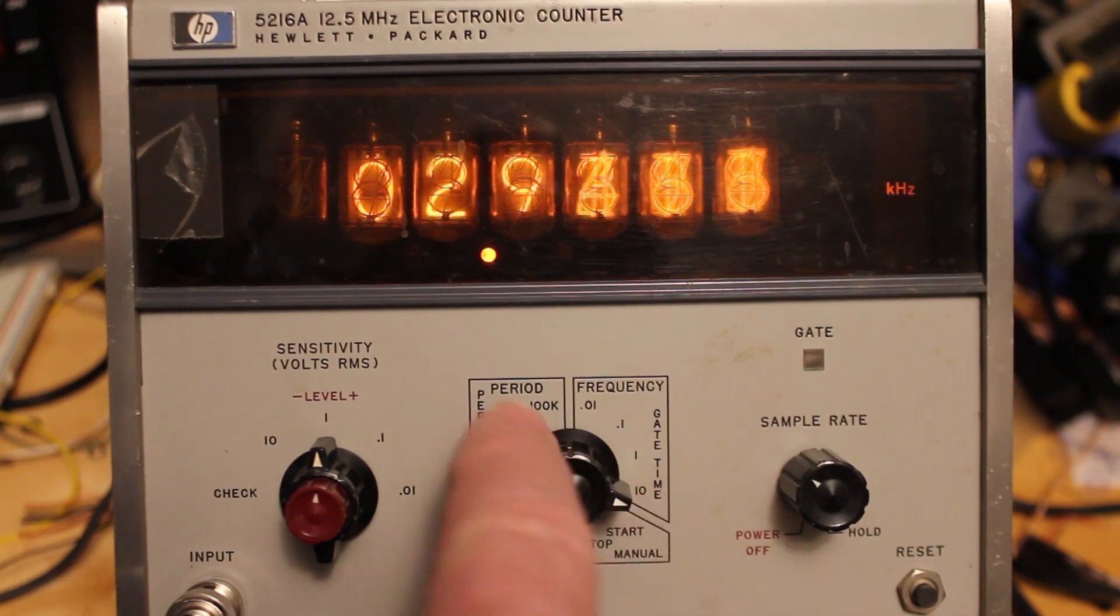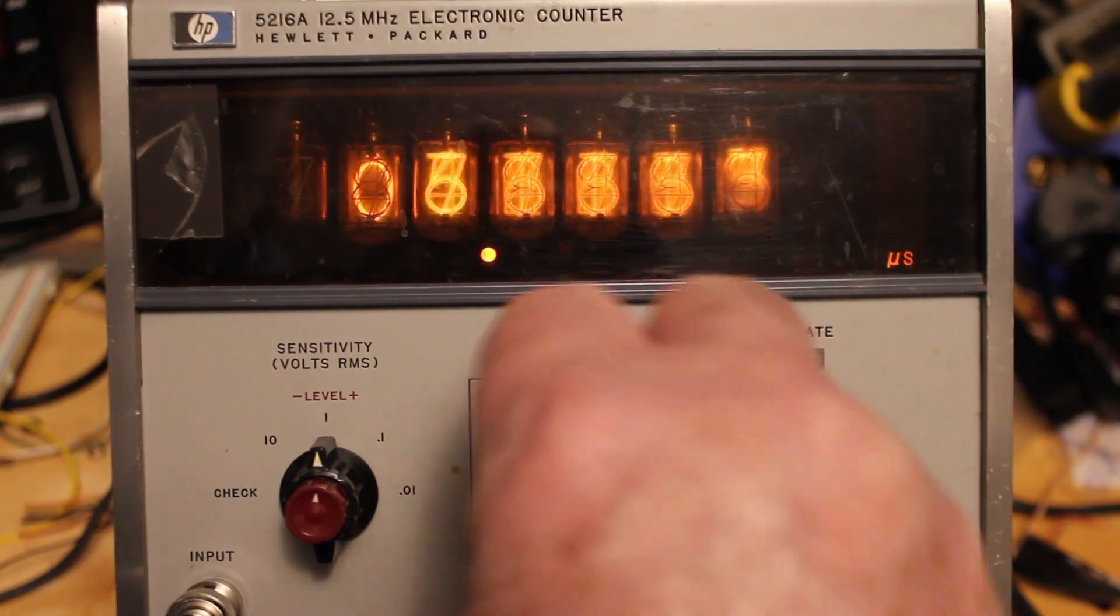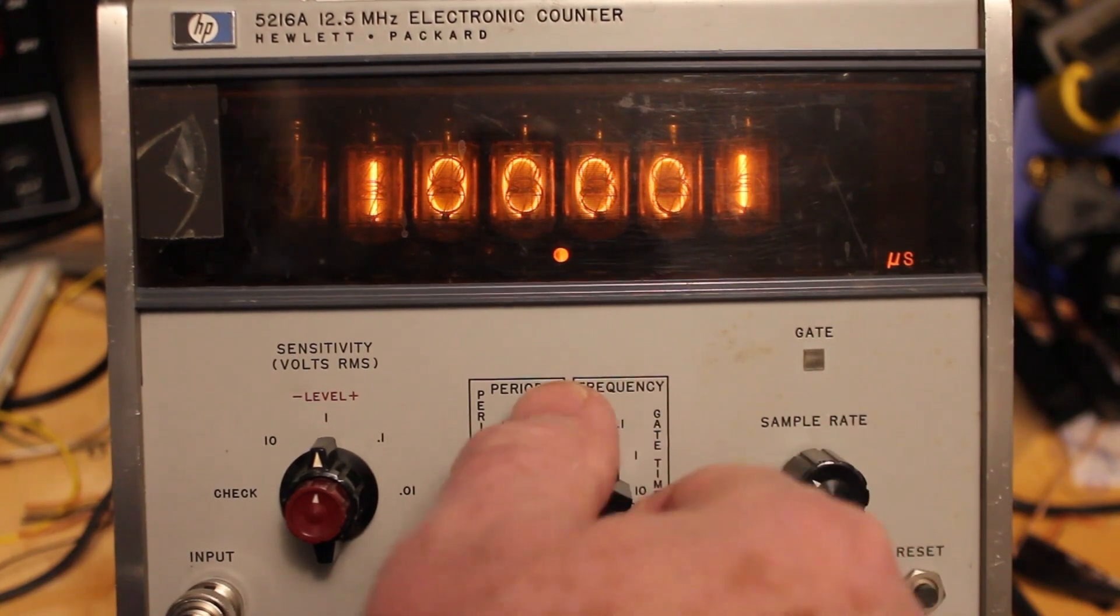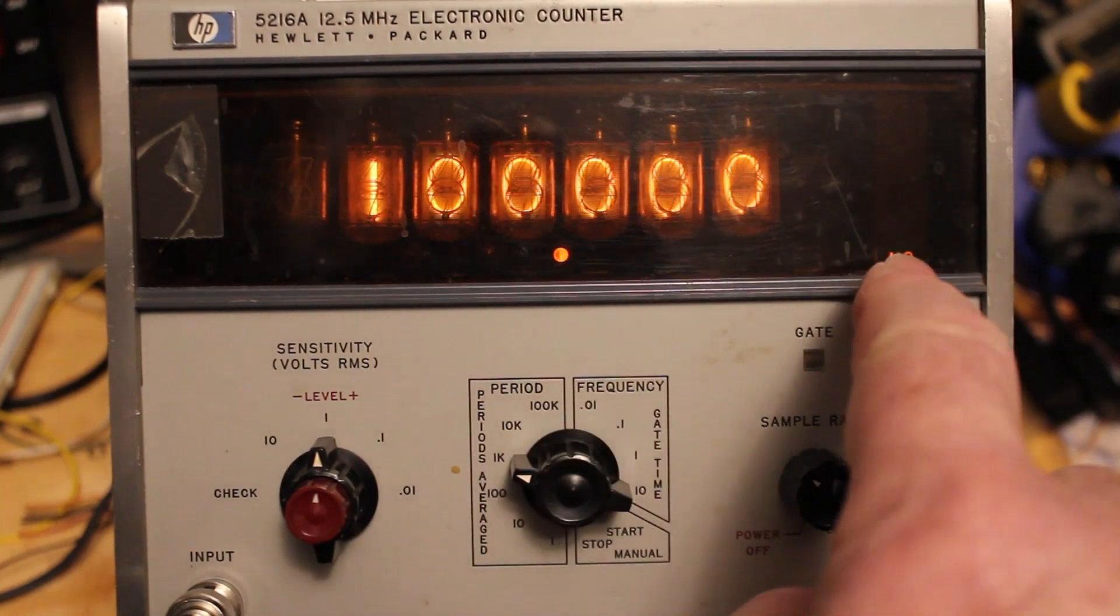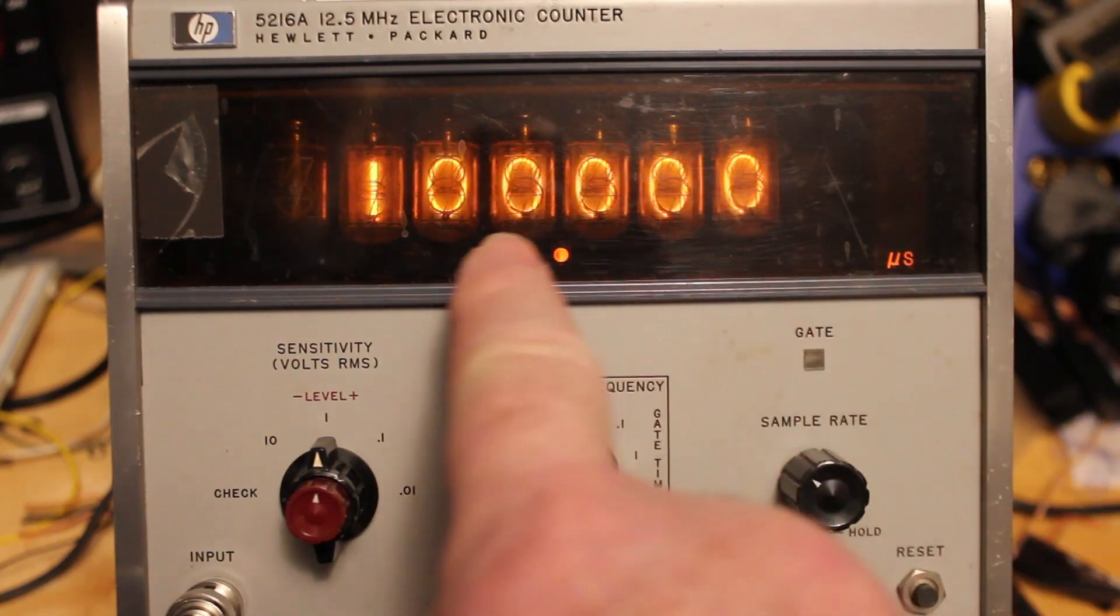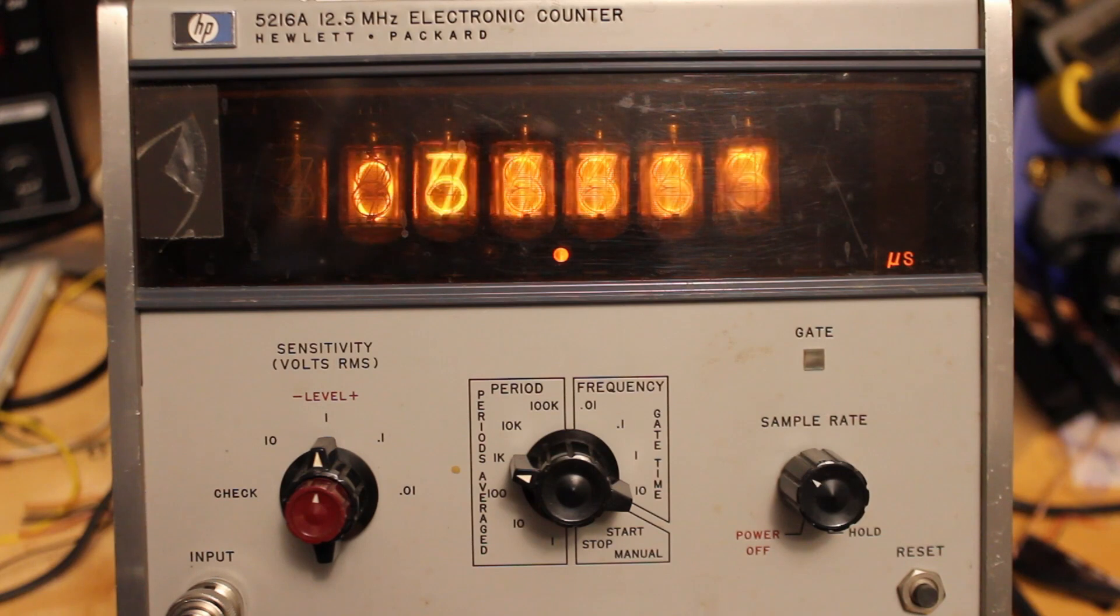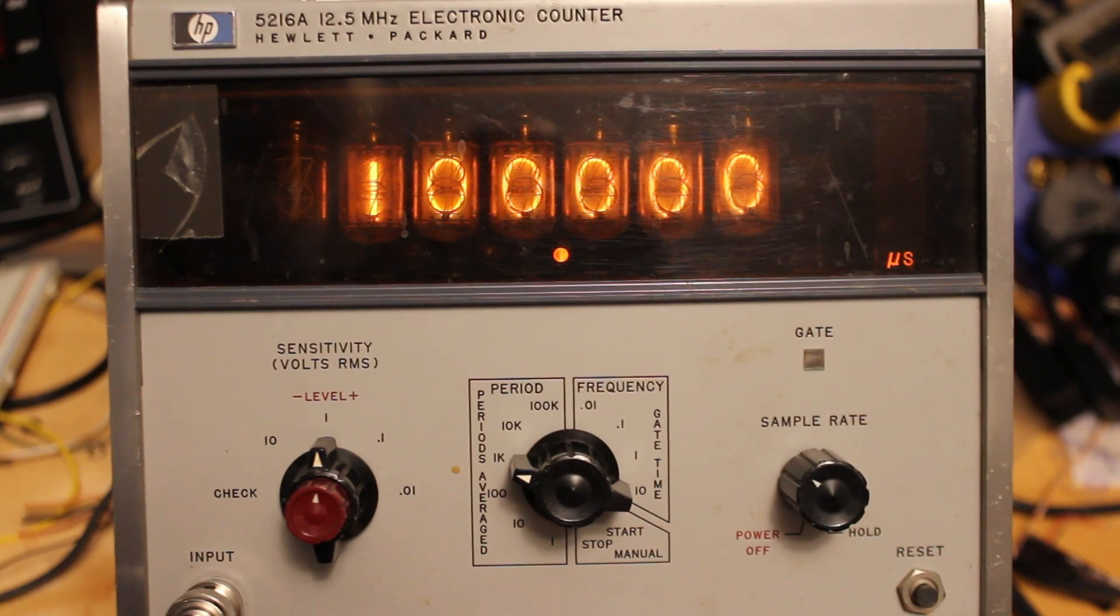Another cool feature on this little guy is it takes and averages a bunch of periods. So that's a 10 megahertz or 10 kilohertz square wave coming into it. We can see here microseconds—so each square wave is 100 microseconds long. 100 microseconds times 10,000 gives you one second. Kind of a cool little function.